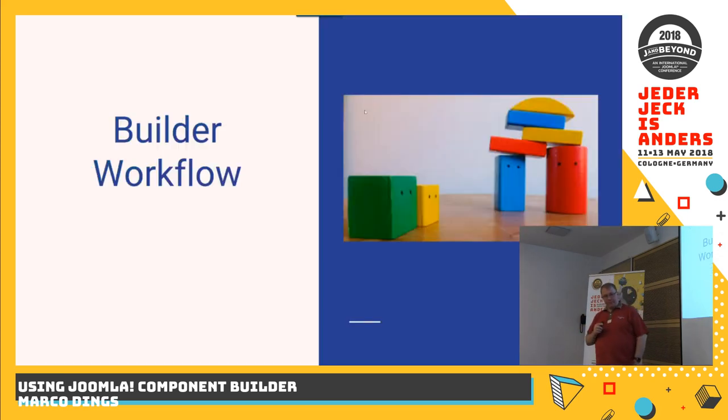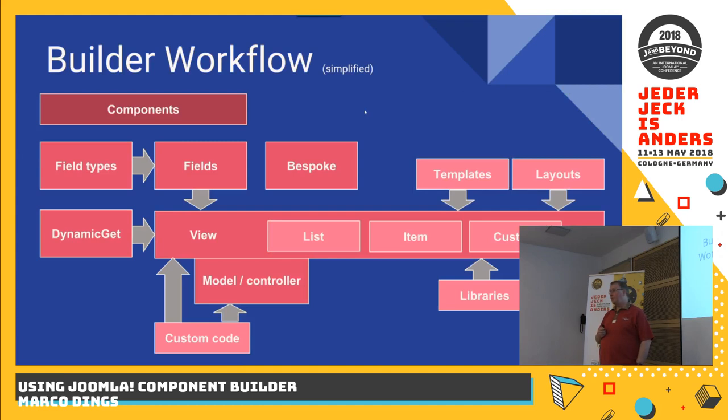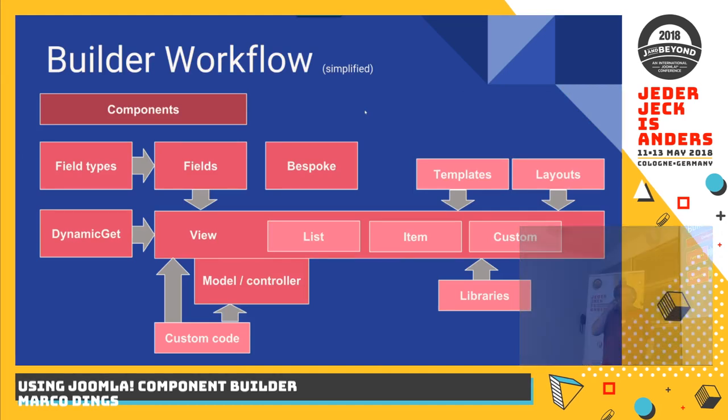Let's talk about the workflow — what it takes and what's possible in creating a component. I've put together a simplified diagram, and these are the topics we'll touch upon: components, field types, fields, bespoke code, dynamic get, list view, item view, custom view — stuff that has to do with interacting with the data of your model — the controller, some libraries, and some graphical stuff.